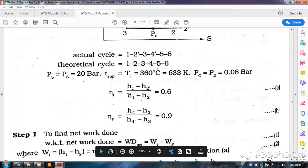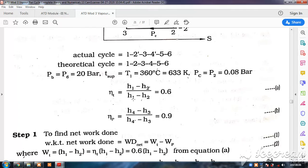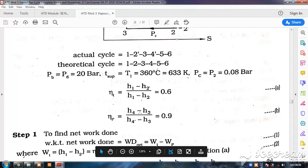Turbine efficiency: H1 minus H2 dash, this actual enthalpy drop divided by maximum enthalpy drop that is isentropic H1 minus H2, that is 0.6. Here pump work is H4 minus H3 divided by H4 dash minus H3 is 0.9. This is pump efficiency.